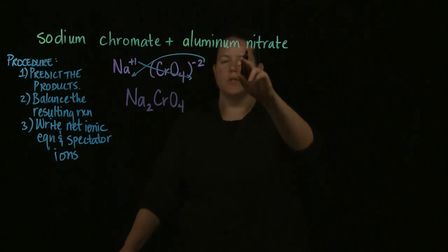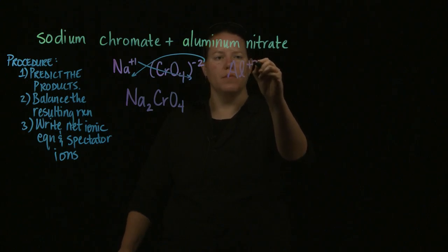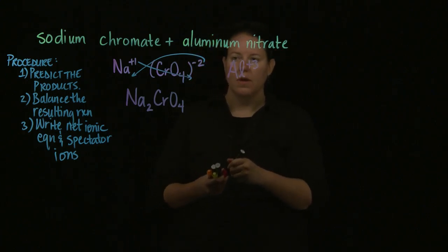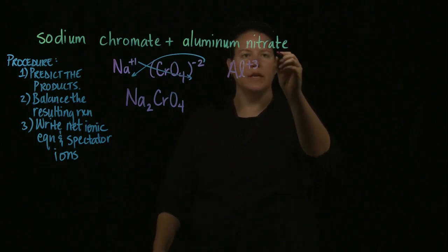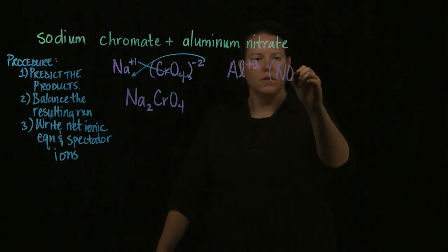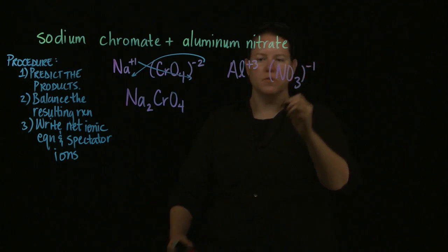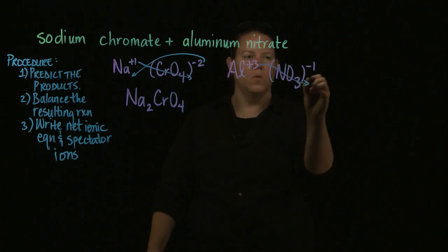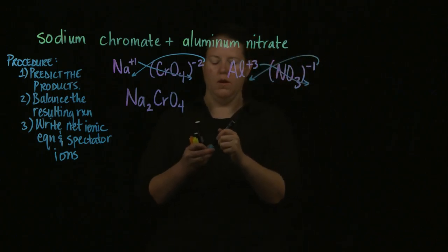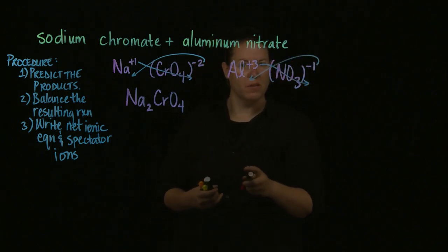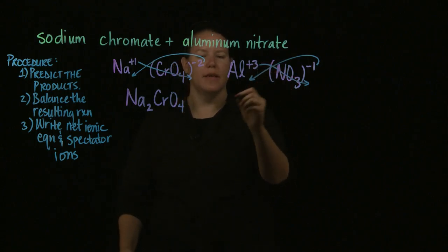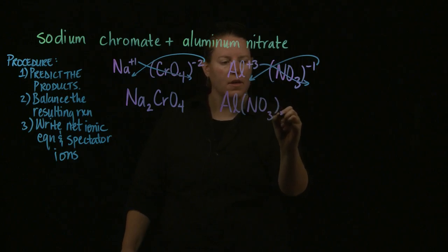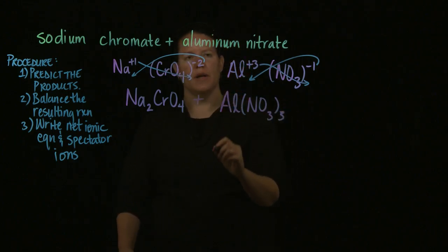Let's do that for aluminum nitrate as well. Aluminum is a plus three because it's found in group three of the periodic table. Nitrate — '-ate' again tells me that it's a polyatomic ion — NO₃ minus one. Crossing those two charges, I get Al(NO₃)₃ — one aluminum and three nitrates.